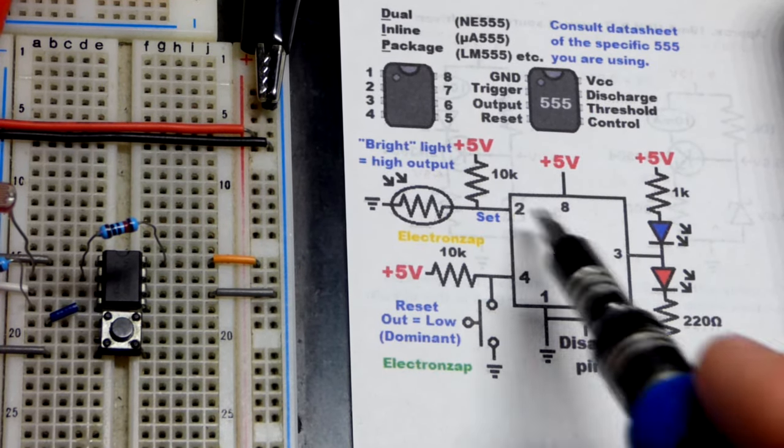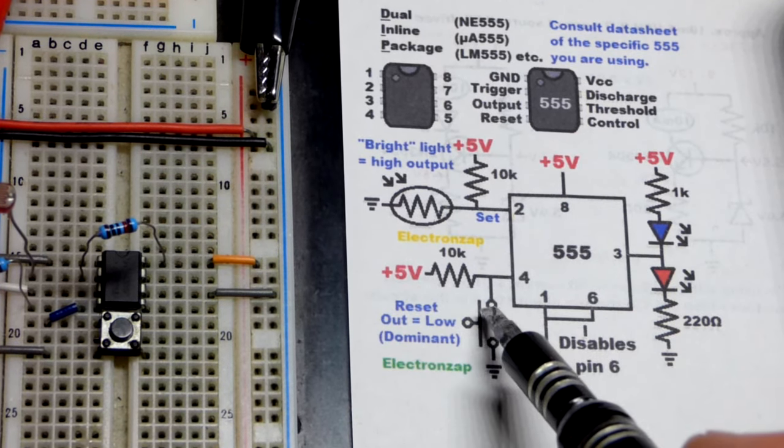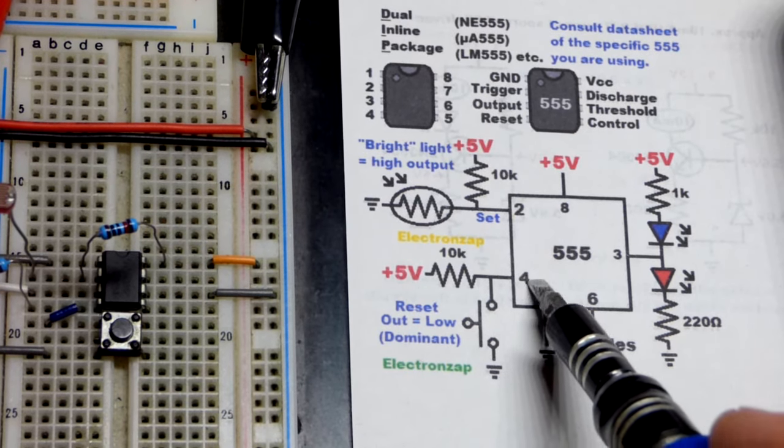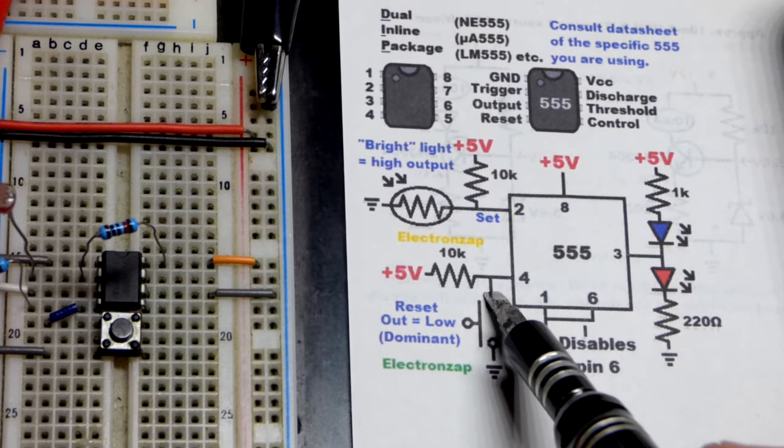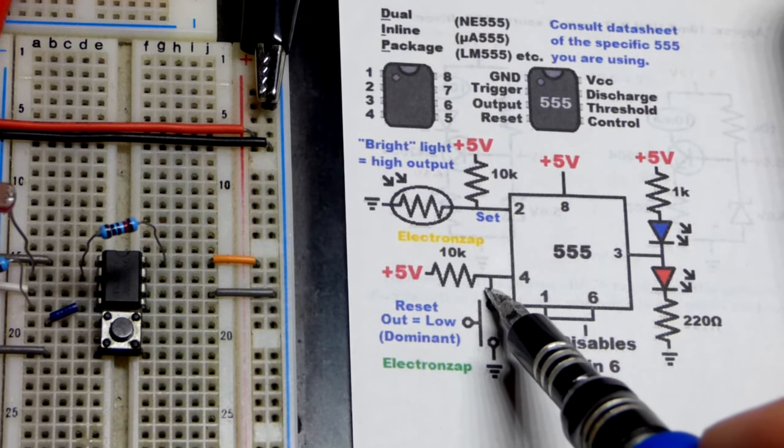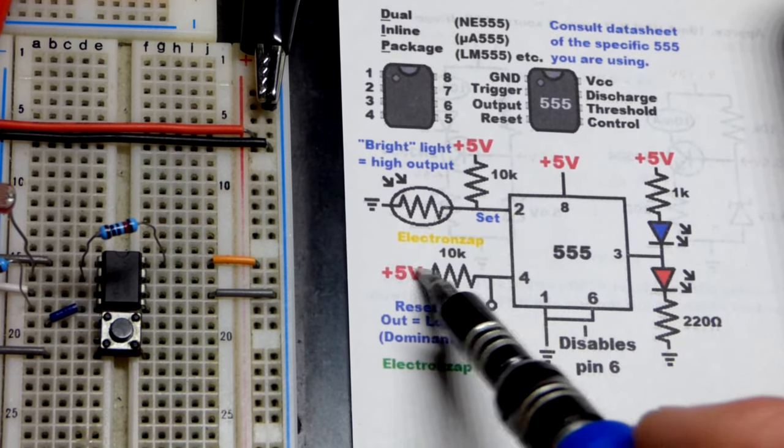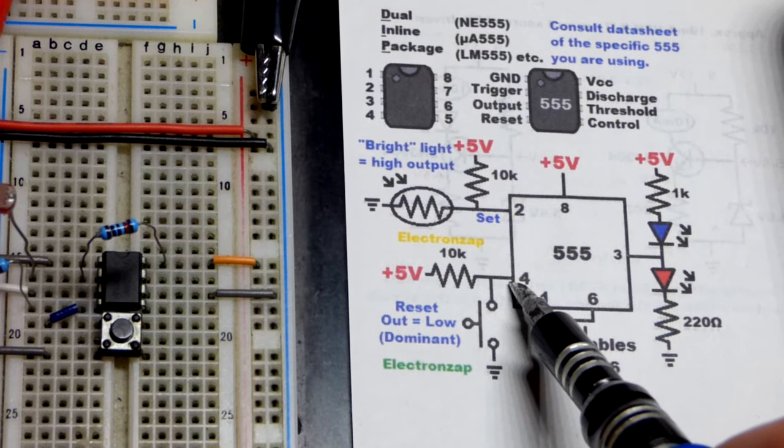If we wired up pin 6 we could like bounce it back and forth as the light goes up and down. But instead I did the reset. And so reset pin I think you got to get like less than half a volt when you're working with 5 volts from relatively recent videos. But in any case we have a pull-up resistor.